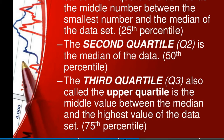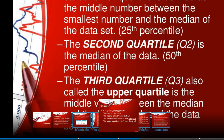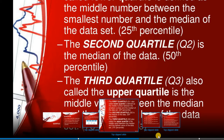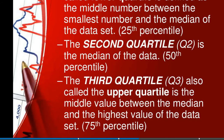The first quartile Q1, also called lower quartile, is defined as the middle number between the smallest number and the median of the data — that is the 25th percentile. The second quartile Q2 is the median. The third quartile Q3, called upper quartile, is the middle value between the median and the highest value of the data set.